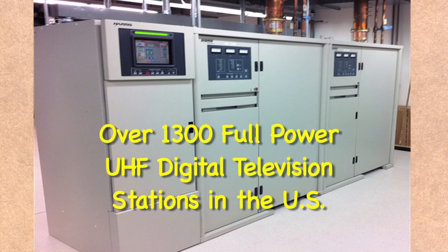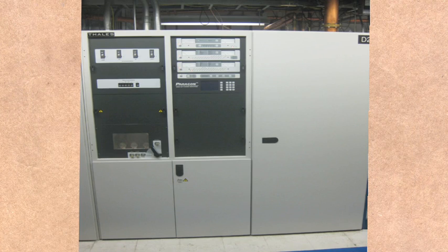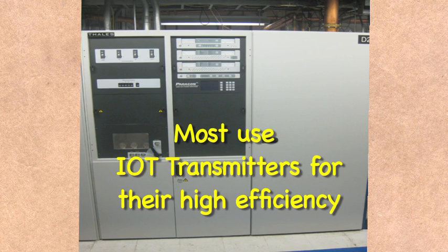Today, there are more than 1,300 full-power UHF digital television stations on the air in the United States. Most of them use IoT amplifiers for their final output stage due to their high efficiency compared with solid-state UHF transmitters.